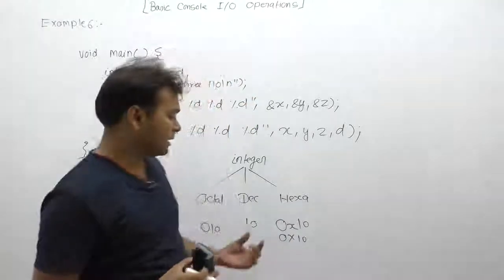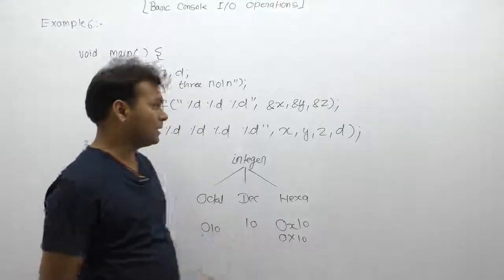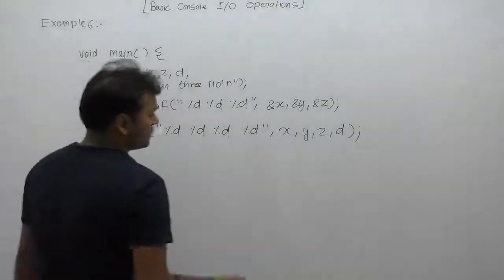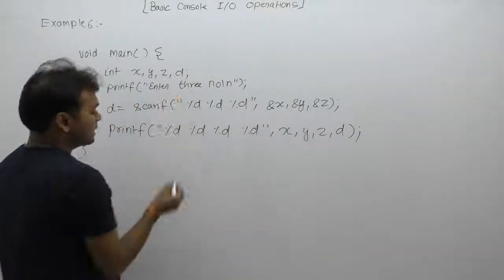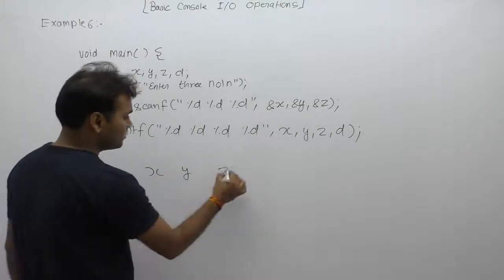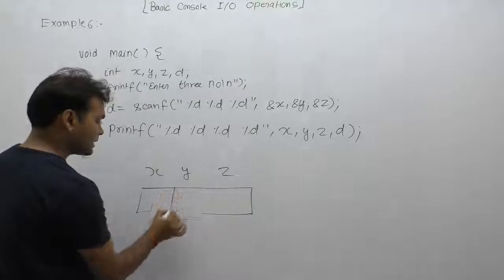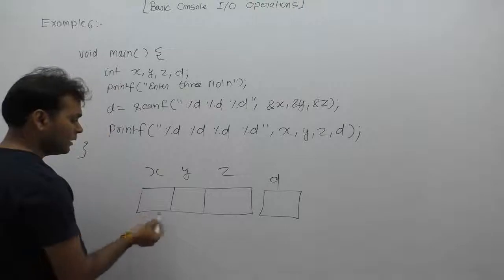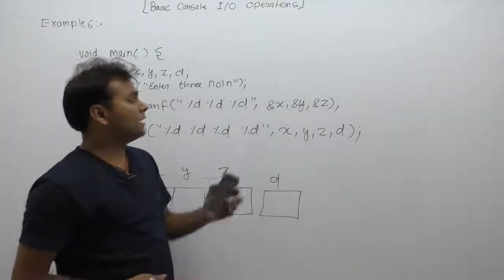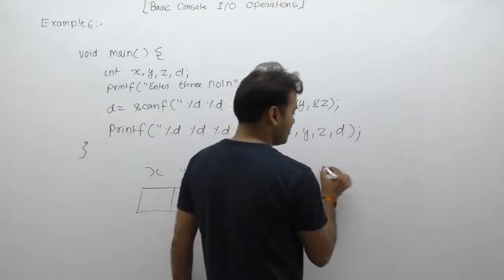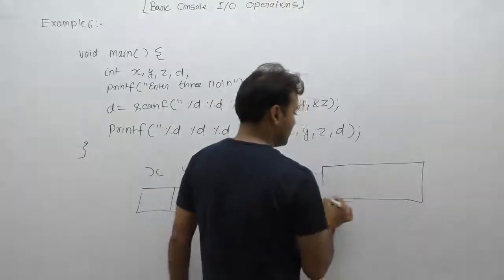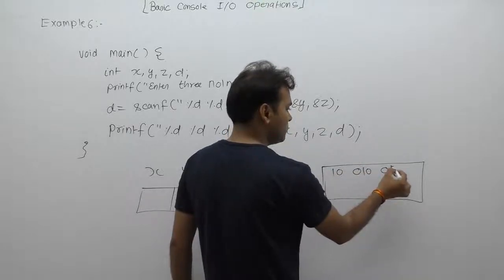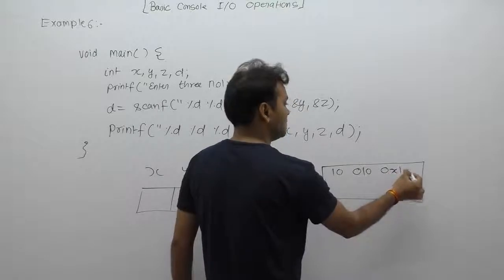Similarly, suppose we want to enter integer numbers at runtime in different formats - maybe in decimal, maybe in octal, maybe in hexadecimal. Let's see this example. For variables x, y, and z, we are reading three variable values plus one extra variable d. At runtime, the inputs entered from the keyboard are: 10, 010, and 0x10.